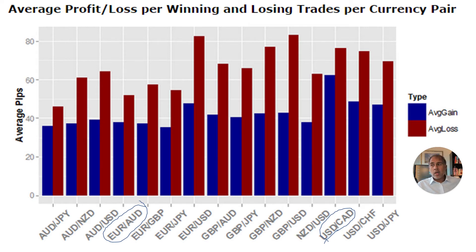There are some currency pairs, however, where the gap is closer — Australian dollar, Japanese yen, for instance — where you could argue it might be easier to make money.